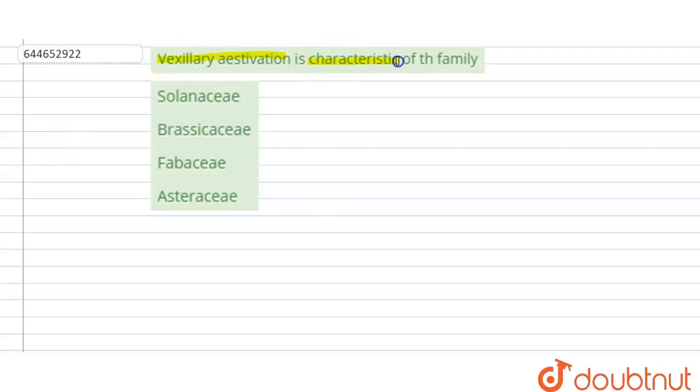is that vexillary aestivation is characteristic of the family. We are having here the names of certain families and we need to tell which of the following have the vexillary aestivation. Coming to the first one, the